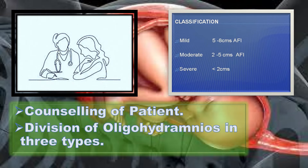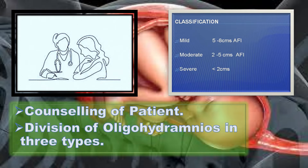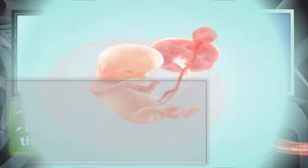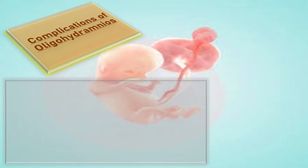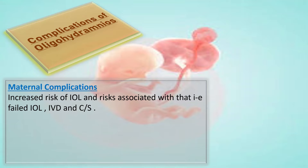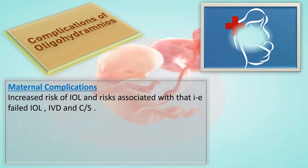Mild oligohydramnios is when AFI is 5 to 8 centimeters. In moderate oligohydramnios, the AFI is 2 to 5 centimeters. When AFI is less than 2 centimeters, that is called severe oligohydramnios.